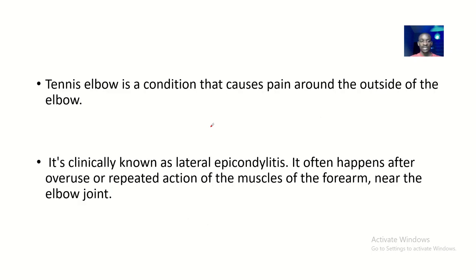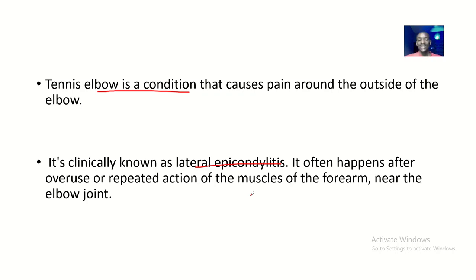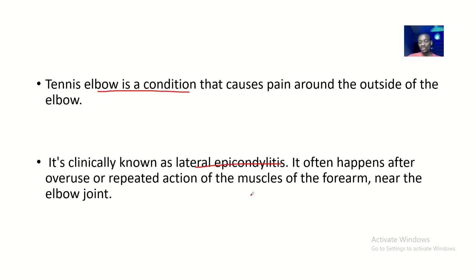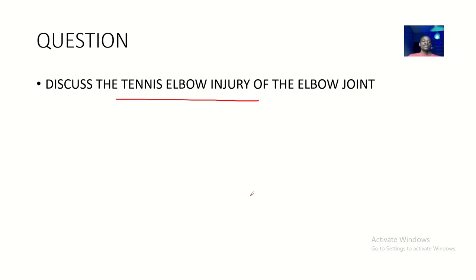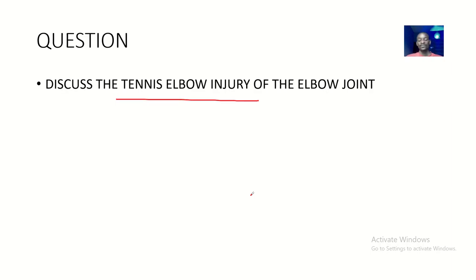Tennis elbow is a condition that causes pain around the outside of the elbow — the lateral side. It is clinically known as lateral epicondylitis. It often happens after overuse or repeated action of the muscles of the forearm near the elbow joint.